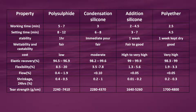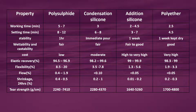Shrinkage in 24 hours: polysulphide 0.4-0.5%, condensation silicone 0.2-1%, addition silicone 0.01-0.2%, polyether 0.2-0.3%. Tear strength (grams per centimeter): polysulphide 2,240-7,410; condensation silicone 2,280-4,370; addition silicone 1,640-5,260; polyether 1,700-4,800.